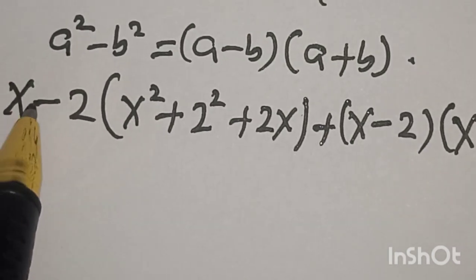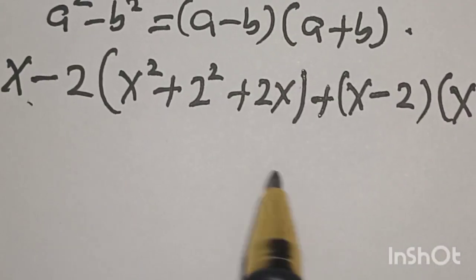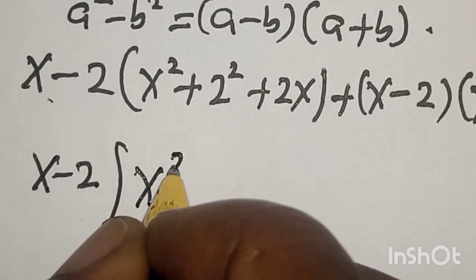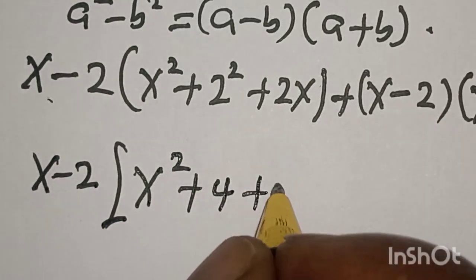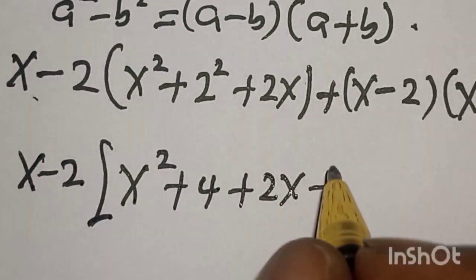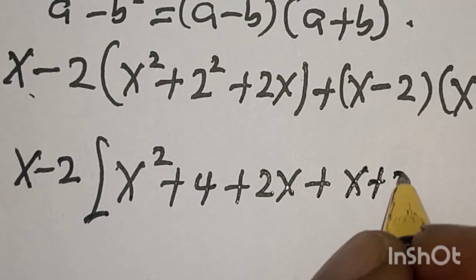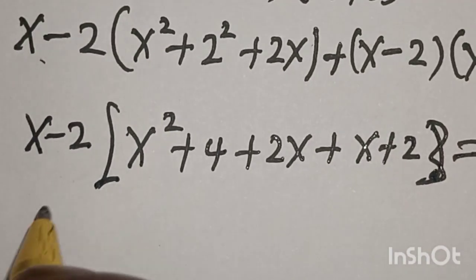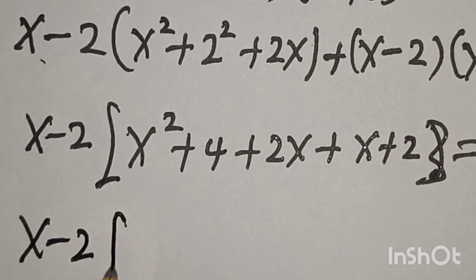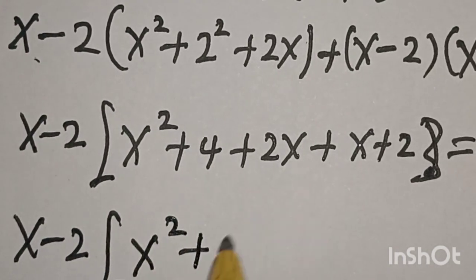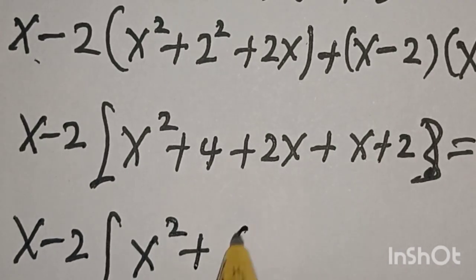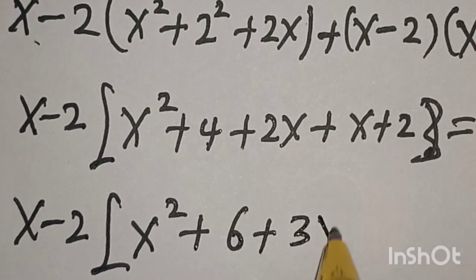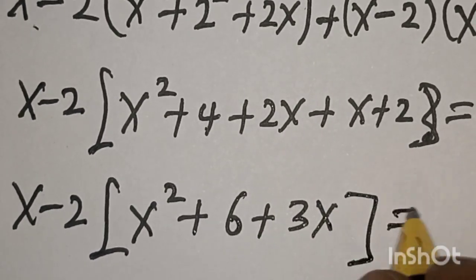Now, (s - 2) appears in both terms, so let's bring one out. We have (s - 2) multiplied by [(s² + 4 + 2s) + (s + 2)] equals 0. Simplifying inside the bracket: s² + 2s + s + 4 + 2 = s² + 3s + 6 is equal to 0.